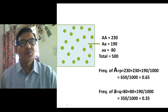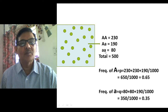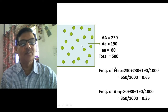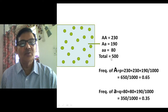So we have to calculate the frequency of the capital A allele and the small a allele in this population. The method is quite simple, but you should know how this calculation will be done.